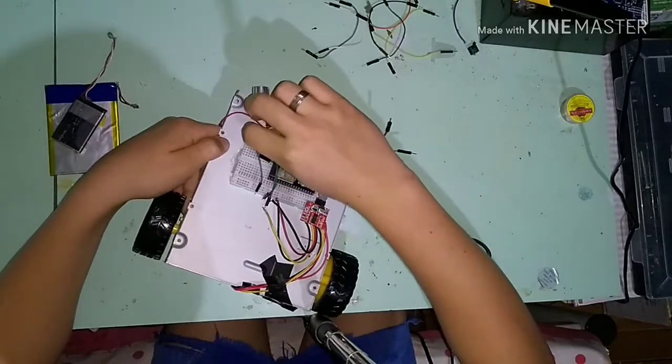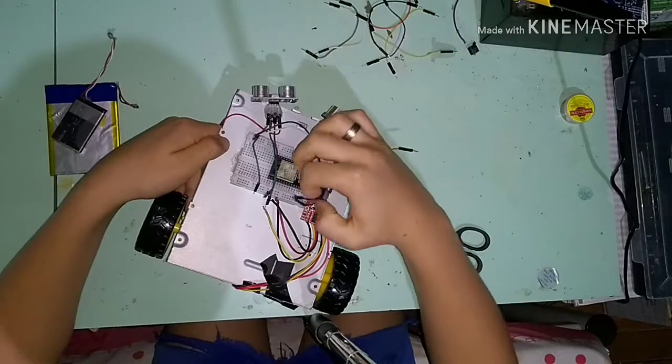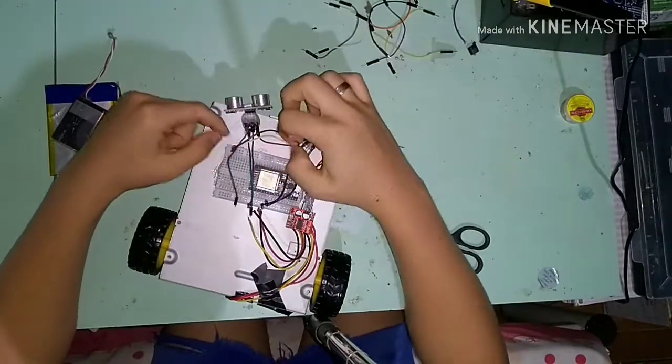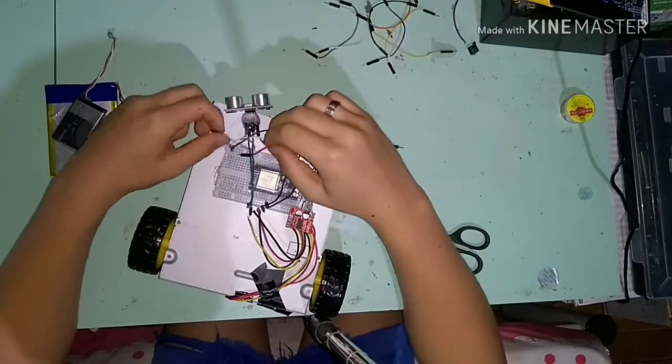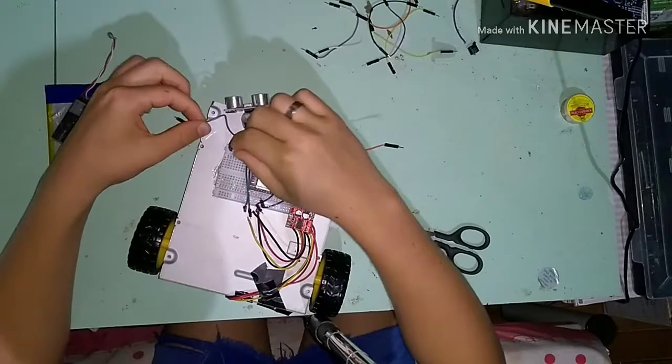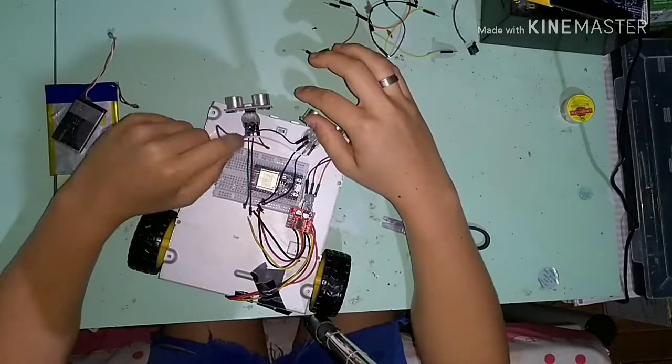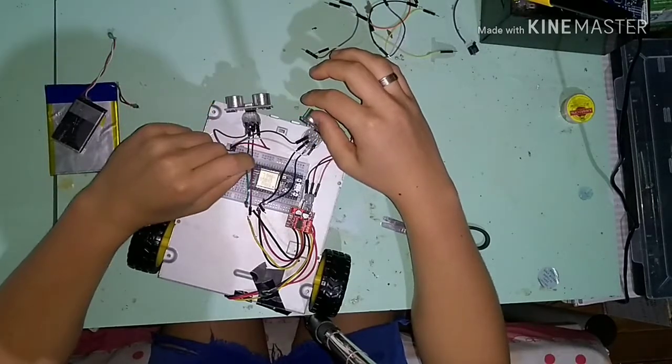Primeiro vamos colocar os fios do sensor ultrassônico no positivo e negativo. Pega o GND, liga na trilha negativa da protoboard e pega o VCC e liga na trilha positiva dos dois sensores. Vai ligando positivo com positivo e negativo com negativo. E assim vai indo.